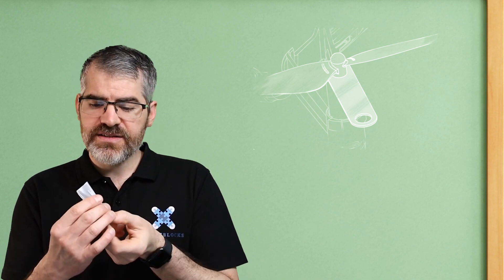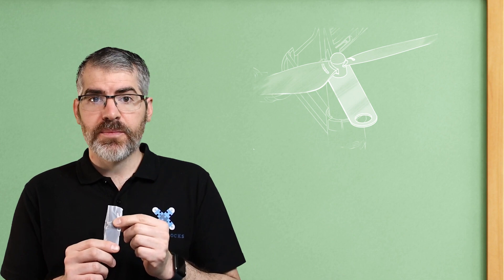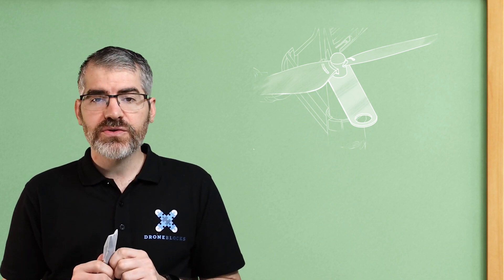You'll also notice that in the box, you get a small set of propellers and a tiny little wrench looking thing. These are your spare propellers and the tool to take the propellers off. I'm going to show you a very cool trick so that you don't need the propeller tool.